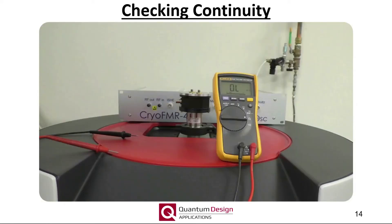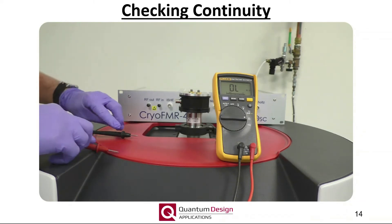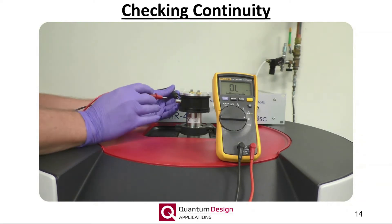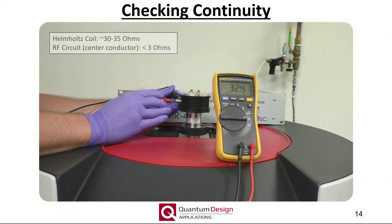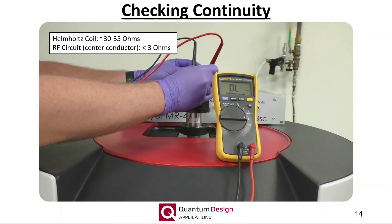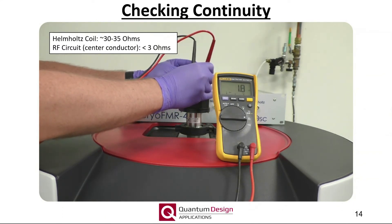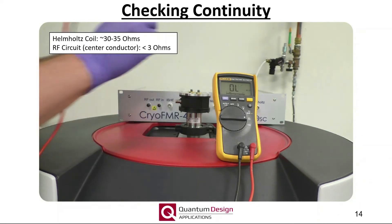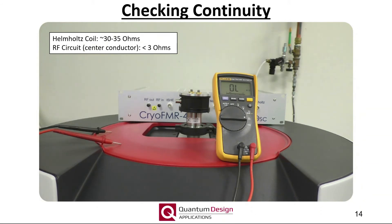Before connecting the cryo-FMR probe to the instrument, it is best to perform a couple of simple DC continuity checks. First, the BNC connection, which applies current to the Helmholtz coil, is checked. The room temperature resistance should be on the order of 30 to 35 ohms. The most common failure here would be an open circuit, in which case the probe will have to be returned to Quantum Design for repair. Secondly, the center conductor of the RF circuit is checked for continuity and should have a resistance below 3 ohms. Note, if you have the cryo-FMR probe suitable for 40 GHz, and therefore 2.92 millimeter K-type connections at the top, take note that these are very delicate and can be easily damaged if one presses too firmly with the multimeter leads. The most common failure here would be an open circuit, which is probably just due to one of the SMPM connections breaking free, in which case the probe should be removed from the system and checked.